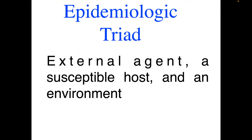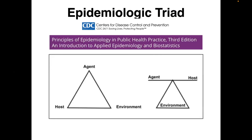In epidemiology, there is a concept where there is an external agent, a susceptible host, and an environment. This is what we call the epidemiologic triad — the agent, the host, and the environment. Based on the Centers for Disease Control and Prevention, all three components should be at equilibrium.